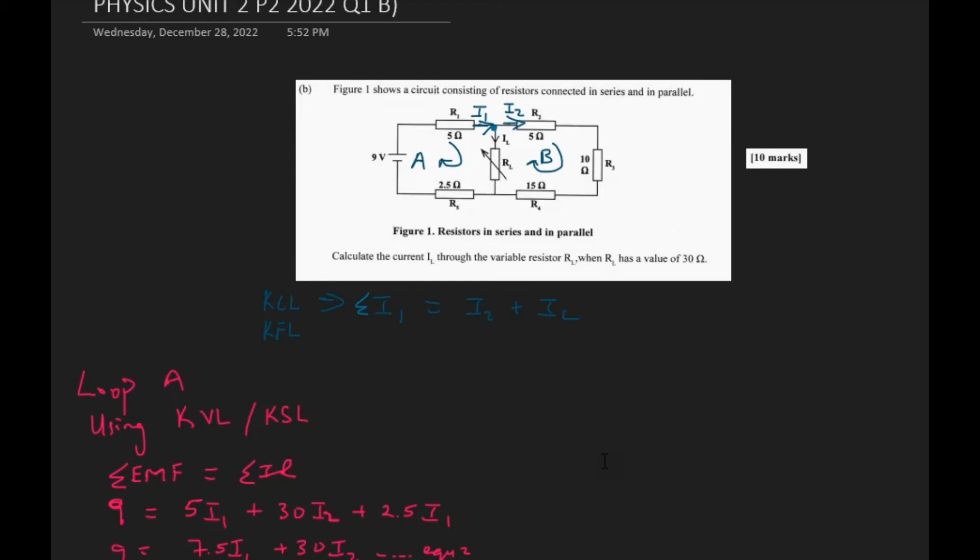Another thing you would need to do is identify the loops that you can easily see in the circuit. There are three loops that can be in the circuit, but for this question I just need two loops. I chose this as my loop, and in this loop I chose that my current is flowing clockwise. Also for loop B, I chose that the current is flowing clockwise as well.